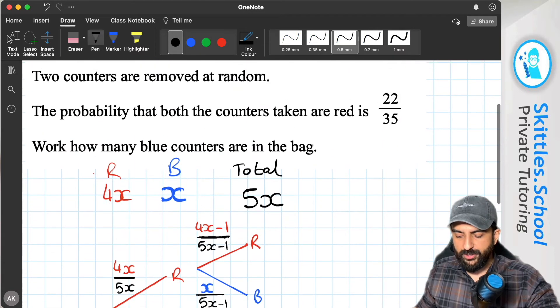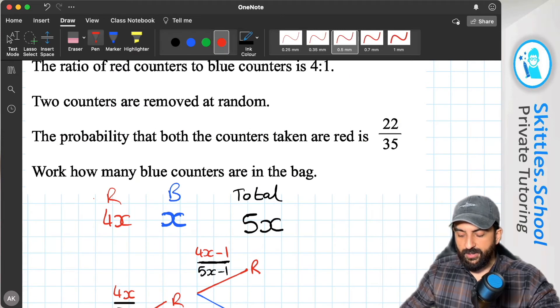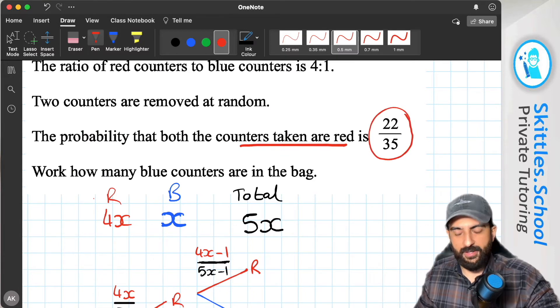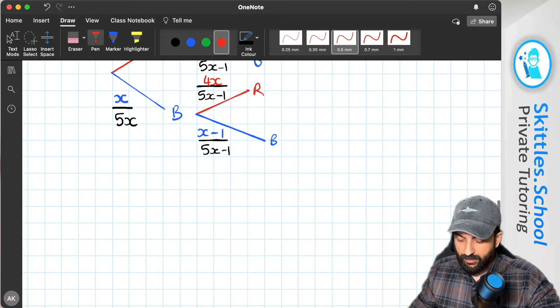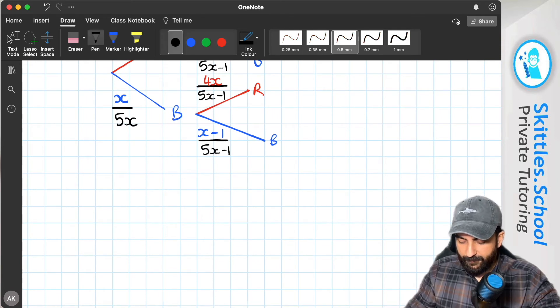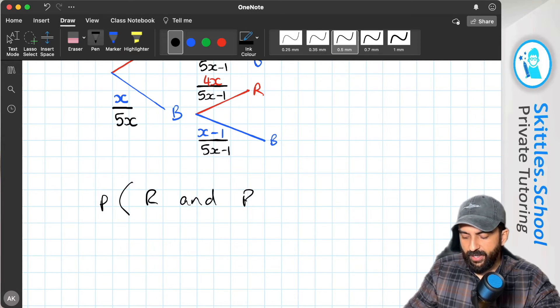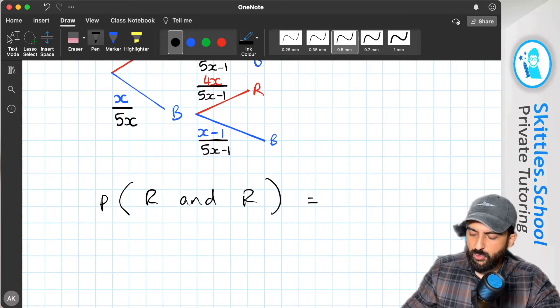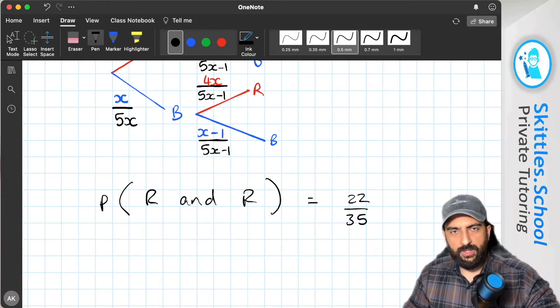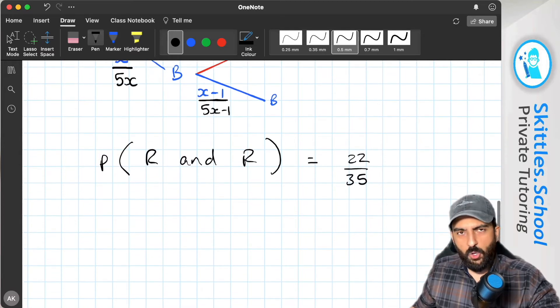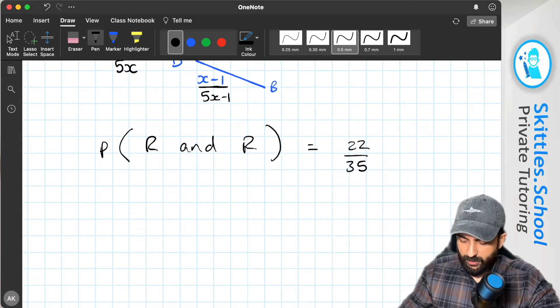Let's go back to our question. The question says the probability that we pick 2 red counters is 22 out of 35. So the probability that we pick a red and a red is 22 out of 35. Okay, so in probability, when we see the word and, we know it's got to be multiply. So we're going to put the multiply in.